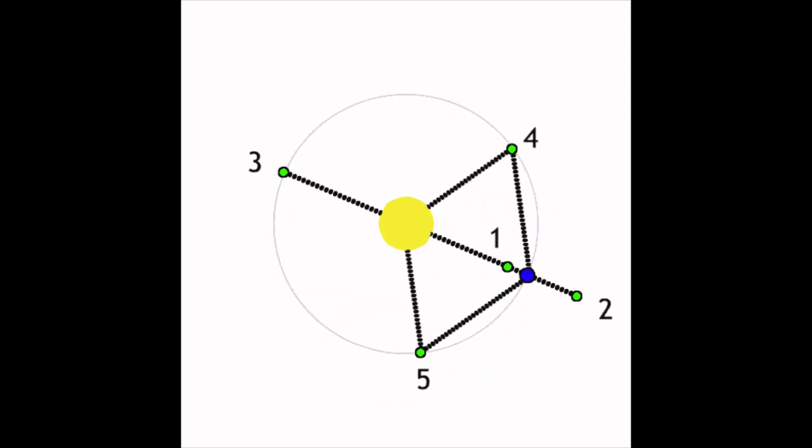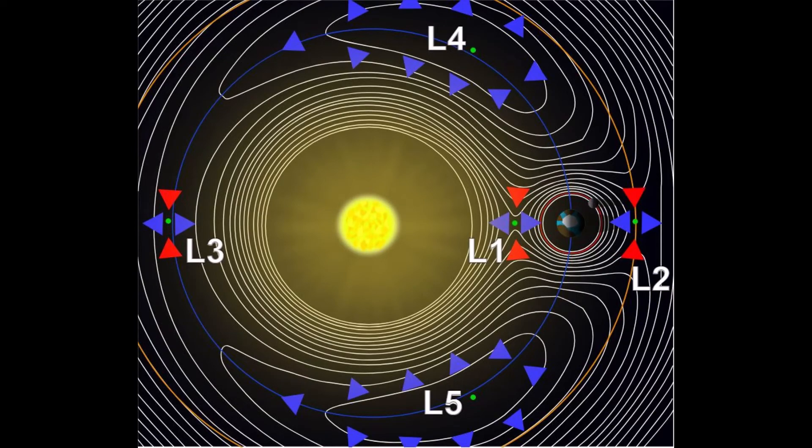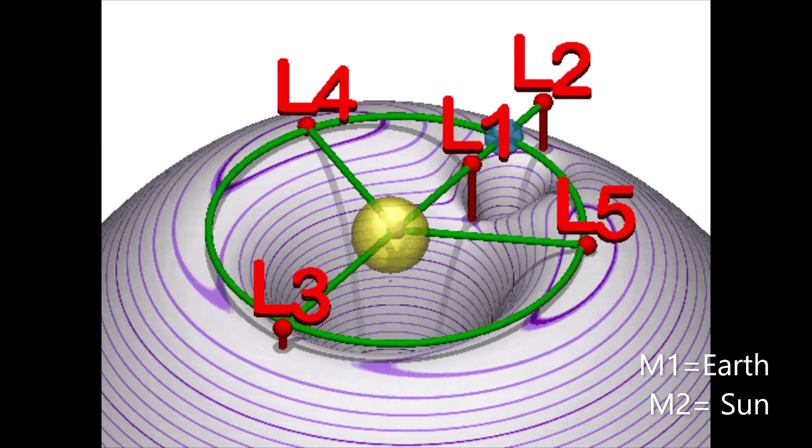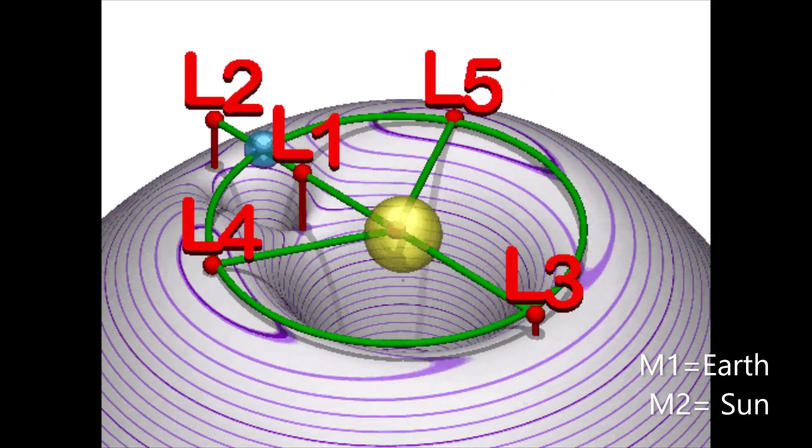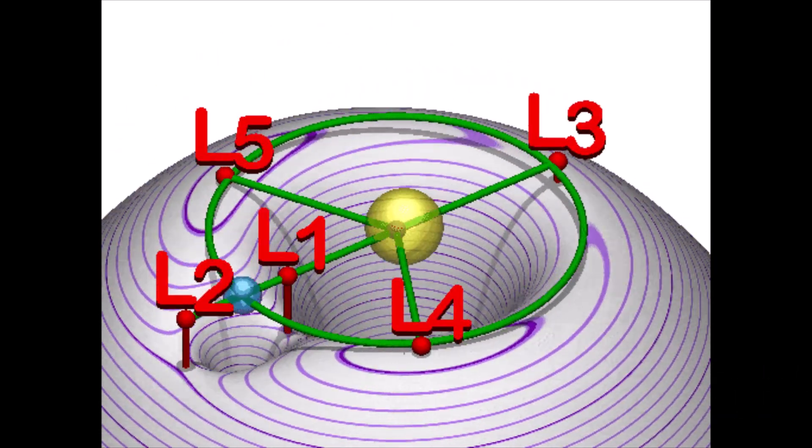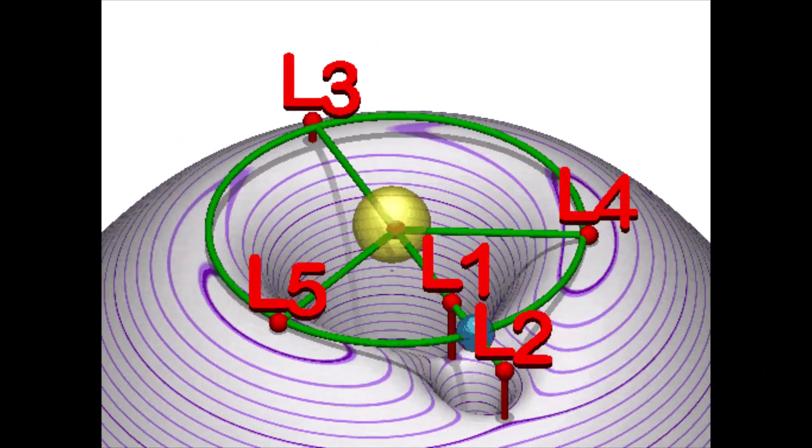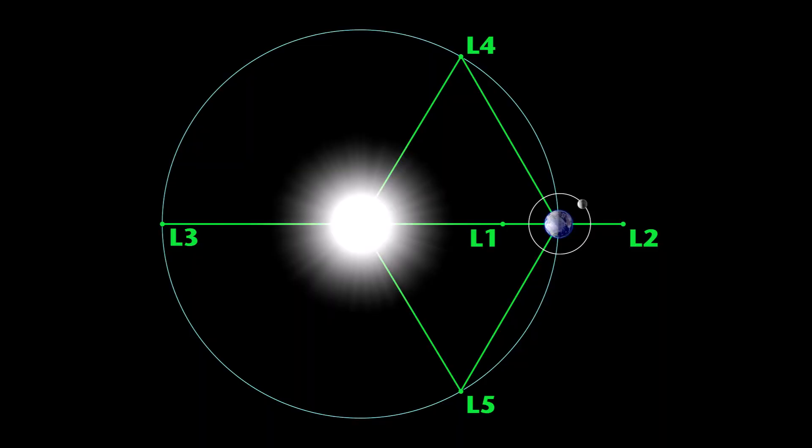The L1 point where Aditya L1 will be placed is the point where gravitational attraction of M2 and that of M1 combined to produce an equilibrium. At the L1 point the orbital period of the object becomes exactly equal to Earth's orbital period.